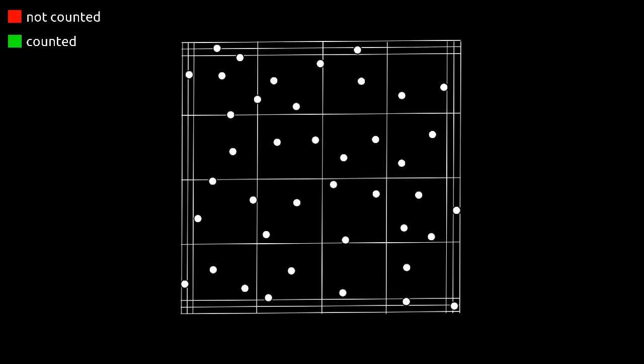To prevent you from counting cells twice, counting rules have been defined. First, cells that lie between the third boundary lines of the group squares are not counted.